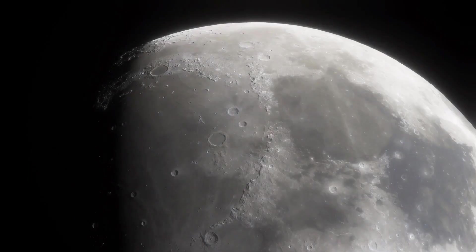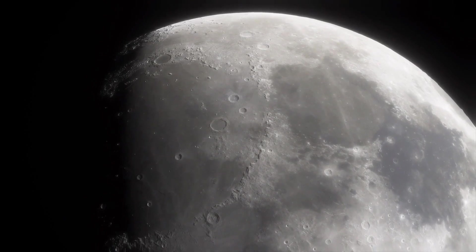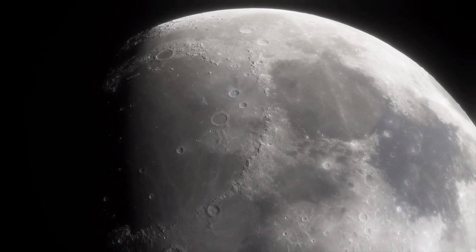Europa looks nothing like our moon. The moon we see every night from Earth is bigger than Europa and is a solid body of rock pummeled by meteoroids, asteroids, and comets.